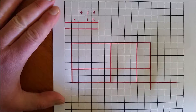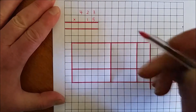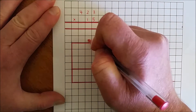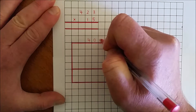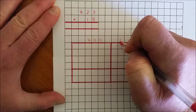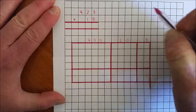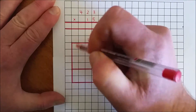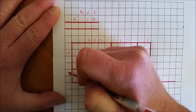I am going to multiply 423 by 15. I begin by expanding the two numbers. So 423 is 400, 20, and 3, and 15 is 10 and 5.